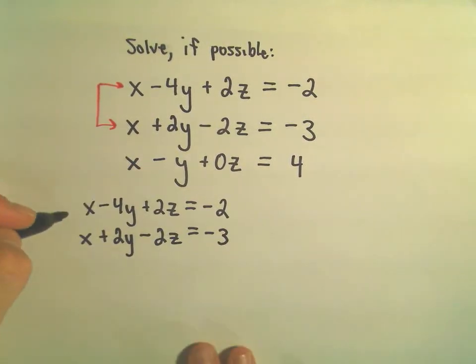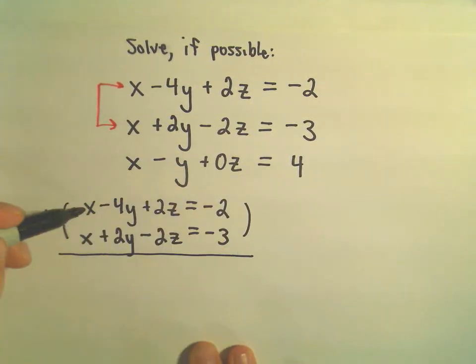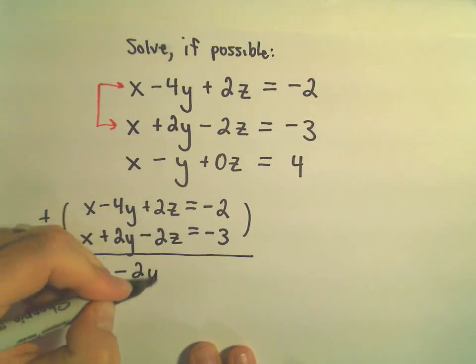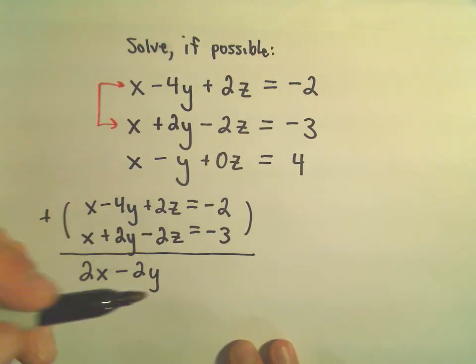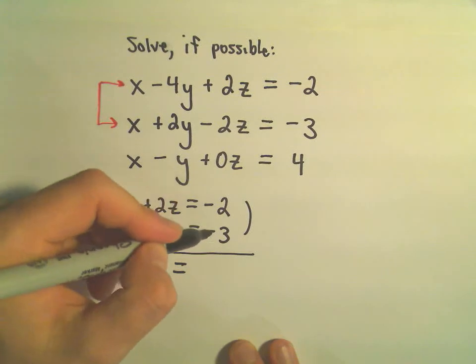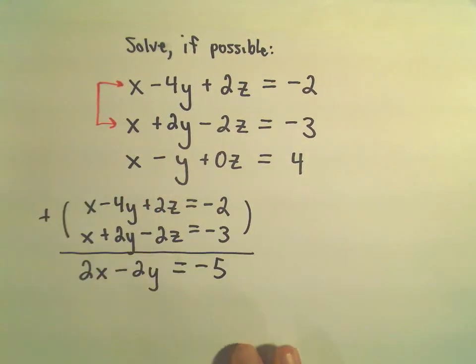If we add these up immediately, we'll get 1x plus 1x, which is 2x. We've got negative 4y plus 2y, which is negative 2y. 2z plus negative 2z will be 0z. And then we've got negative 2 plus negative 3, which is negative 5.